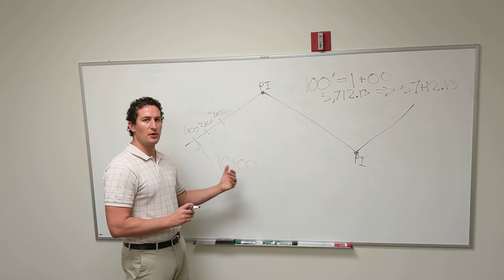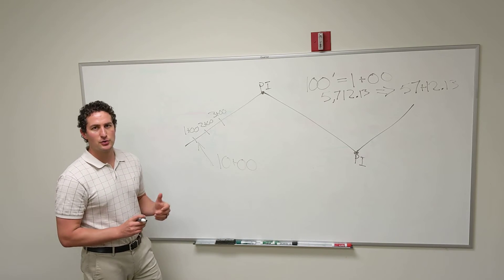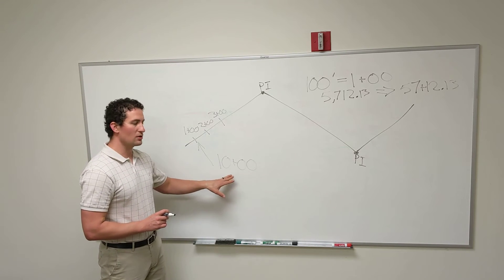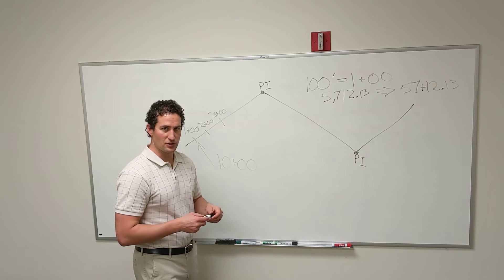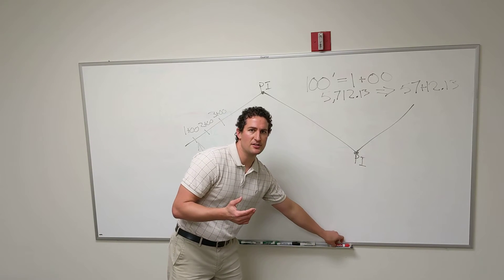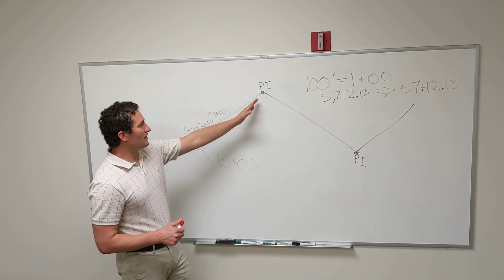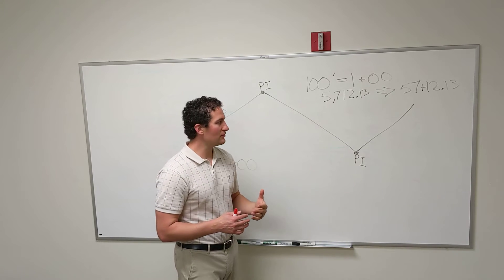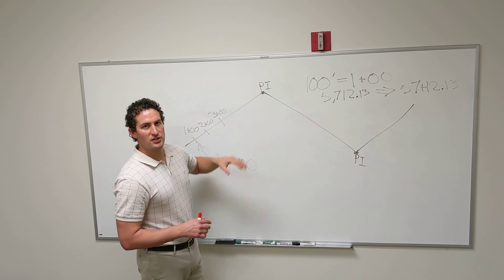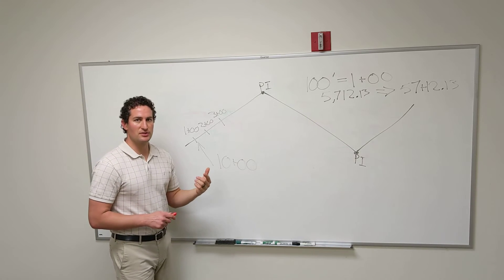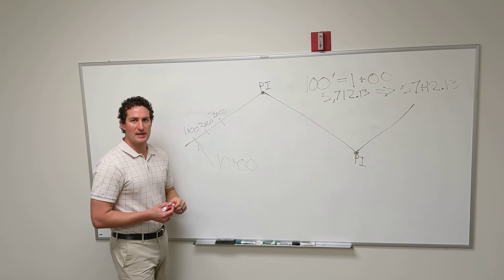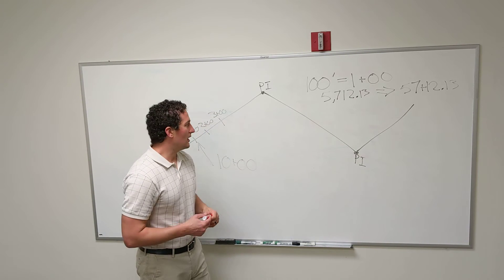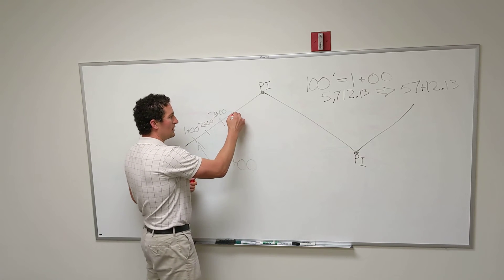Starting at a higher station also allows you to reference other locations. For example, if you're adding onto an existing road, you may want to say the next nearest intersection is at a certain station without going into negative stations. This process is really why we end up establishing the point of intersection as the key reference point. When dealing with horizontal curves, the PI is given as one of those known stations, and we need to move back from the PI to establish the actual stationing along the centerline of the curve.